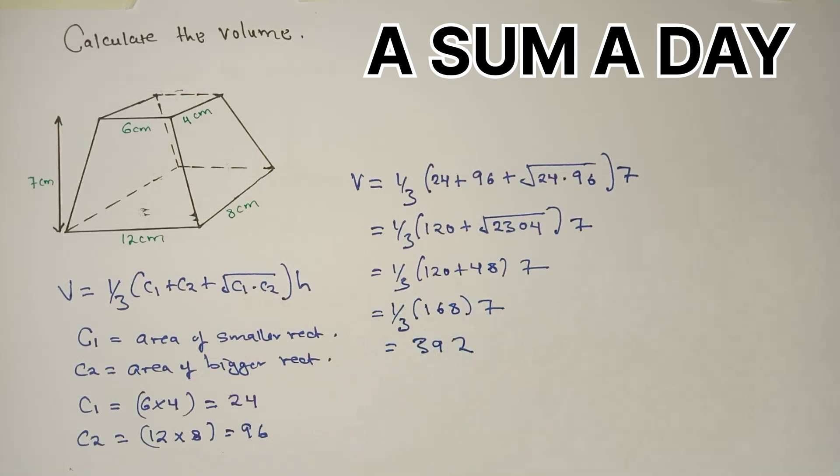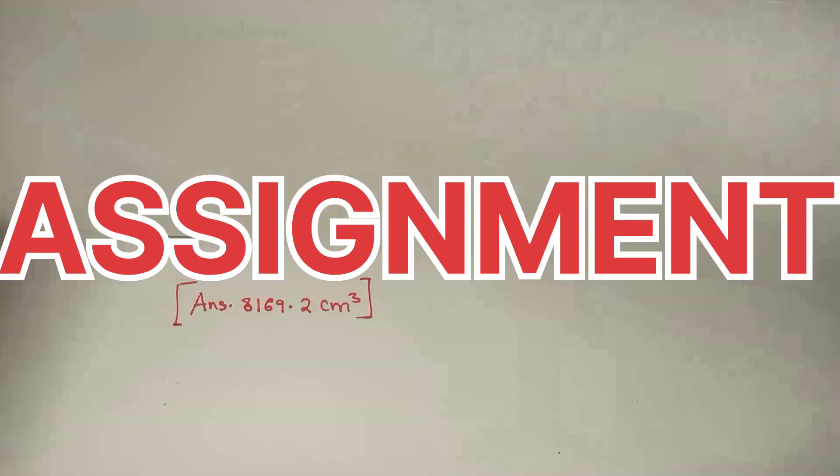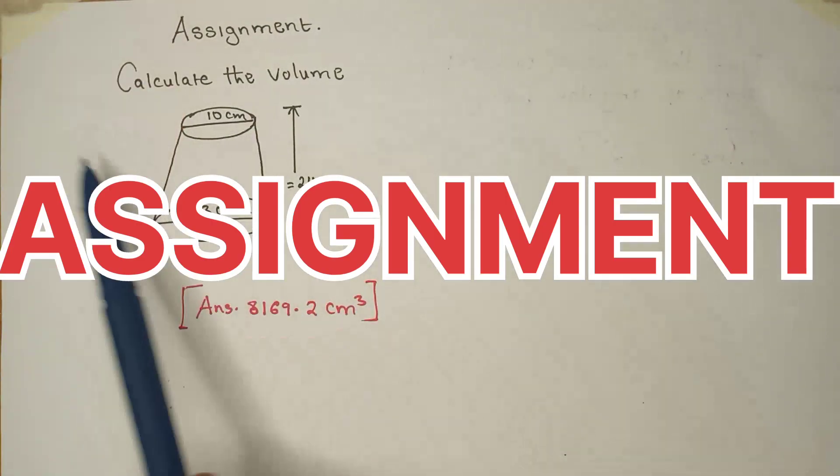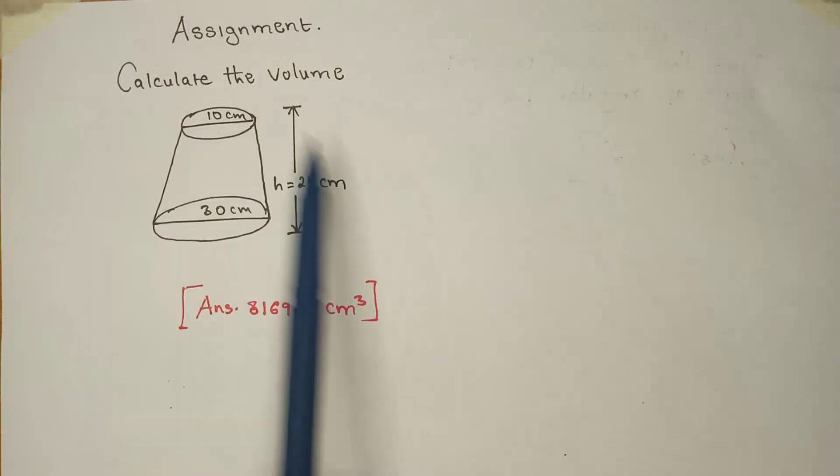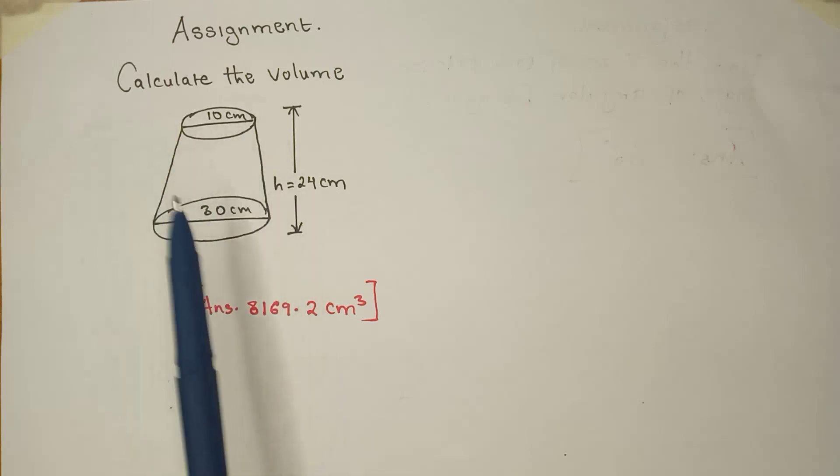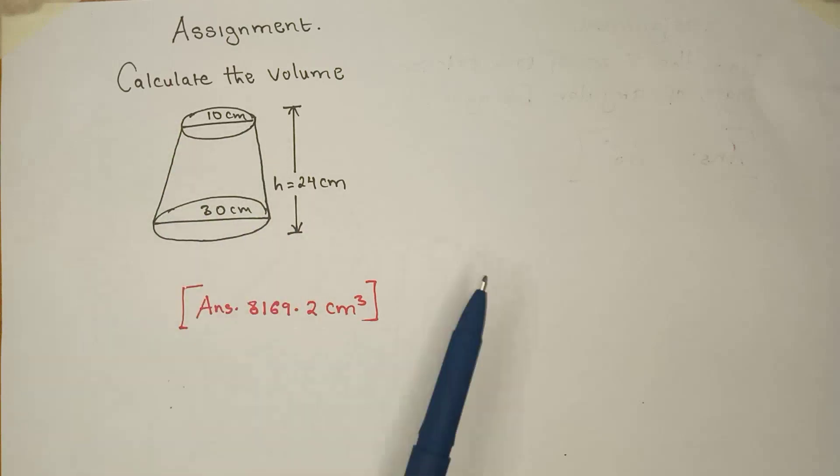So you can try this one as a follow-up using that formula that I've shown you. So your assignment, calculate the volume using that formula where now C1 will be the area of a smaller circle and C2 will be the area of the bigger circle. The answer is 8169. See if you can get that answer. Thank you.